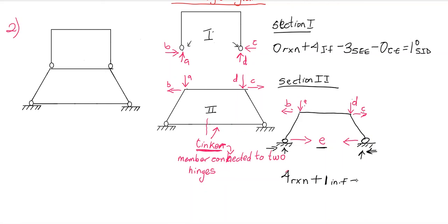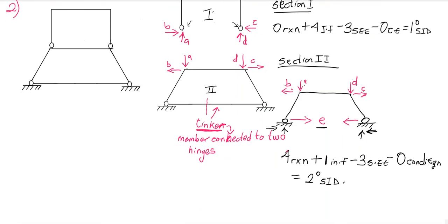For section II: four reactions plus one internal force, minus three static equilibrium equations, minus zero conditional equations. That gives us two degrees of static indeterminacy for section II. For the whole structure, section I plus section II: one degree plus two degrees gives us the third degree of static indeterminacy for the whole structure. That's it for finding the degree of static indeterminacy for frames.